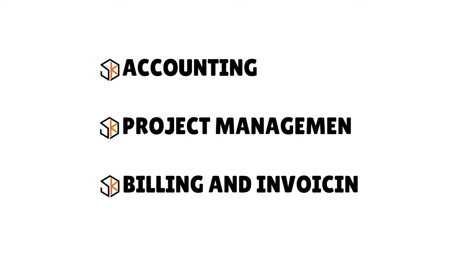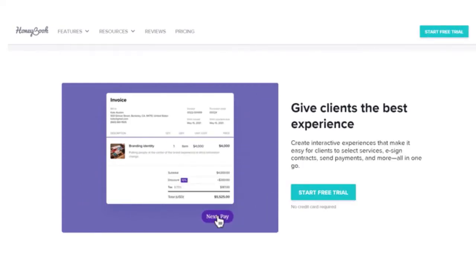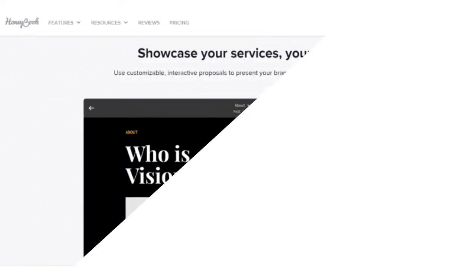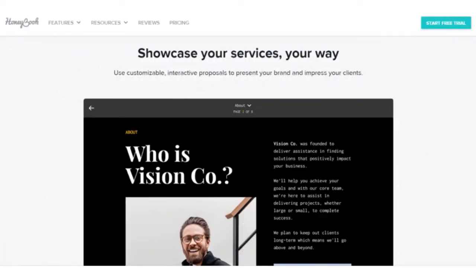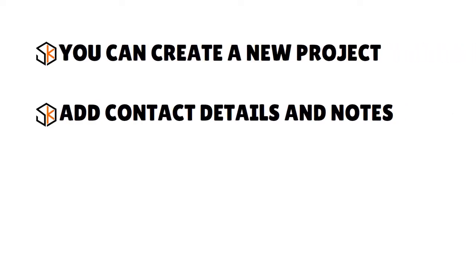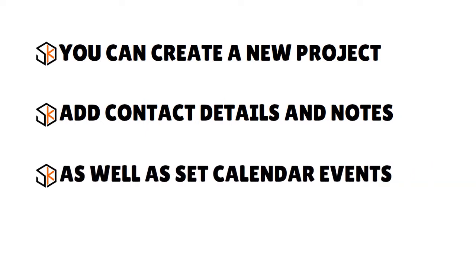What we love is that the user interface and design is wonderful. HoneyBook presents a very clean and minimalist design but also incorporates friendly tips and personal touches across the interface, especially when it comes to accounting and billing. They have a pipeline that shows you the tools you need for accounting, CRM, and project management. You can create a new project, add contact details and notes, and set calendar events — for example, your monthly closing, quarterly closing, or financial reporting calendar.